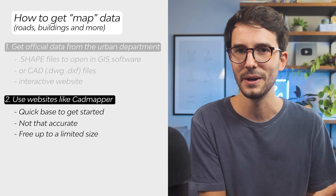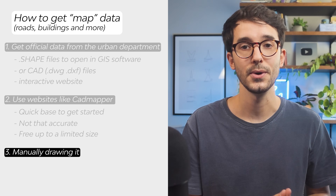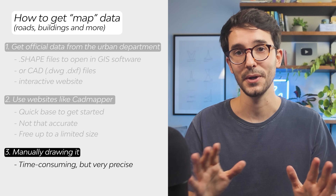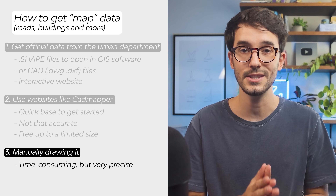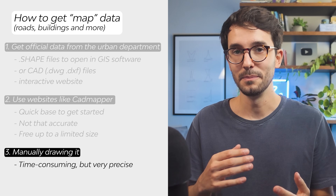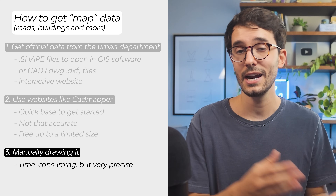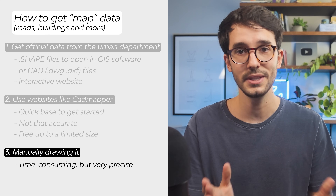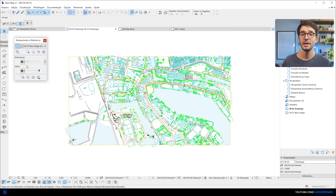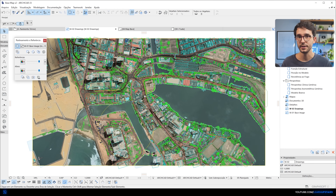Which leads me to the third method. Three: manually drawing it. This is hard work and will not fit every project due to the amount of time it takes. But if you don't have official data from an urban department and you need a high level of fidelity, you will need to resort to this method. I couldn't tell you how many times I've done this through architecture school and even when I did an internship at an urbanism firm. So it's somewhat of a common practice.